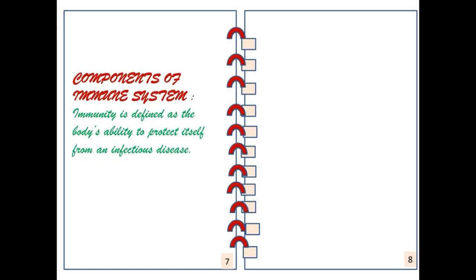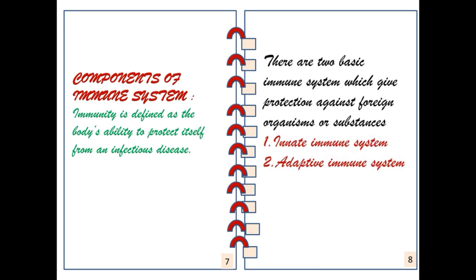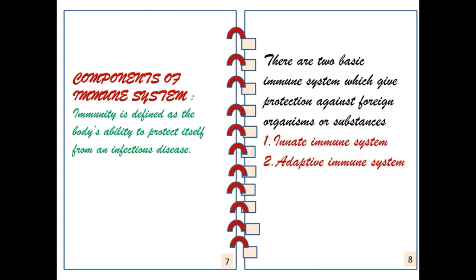Components of immune system: immunity is the body's ability to protect itself from infectious disease. There are two basic immune systems which give protection against foreign organisms or substances. First is innate immune system, second is adaptive immune system. There is also a third immune system which is named passive immune system.